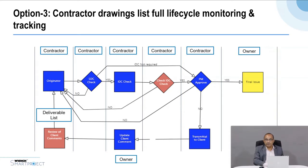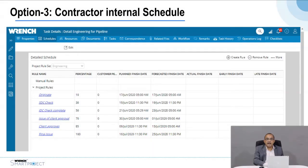If the contractor provides an internal schedule of drawing creation — starting from their internal creation phase, review stage, and submission to the client — you can track the contractor's activities with plan dates and monitor their internal progress to ensure drawings are submitted to the owner on time.